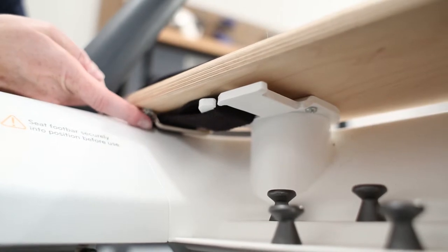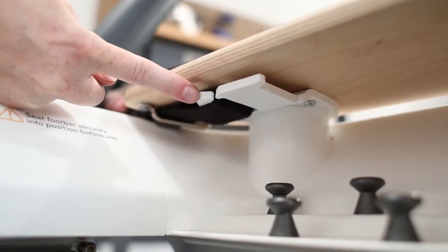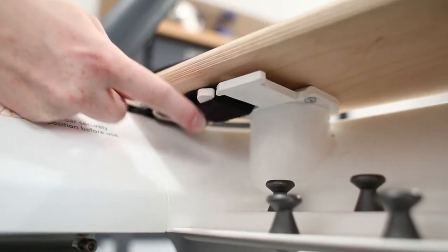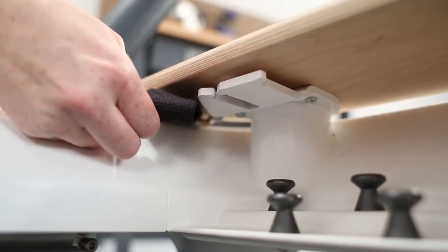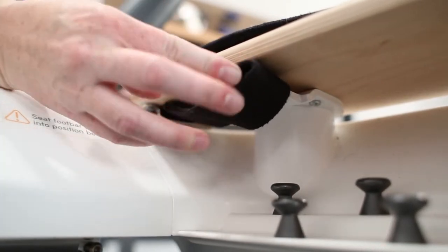Your foot strap should be threaded through this silver footman's loop and onto one of these white pegs. I'm going to take it off of this smaller peg and place it around the bigger peg.